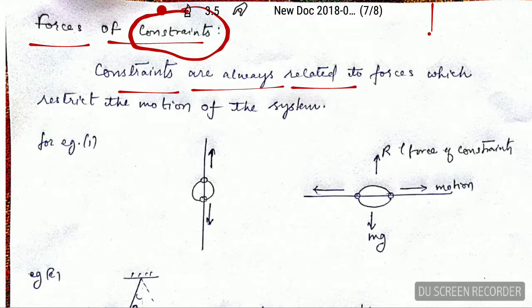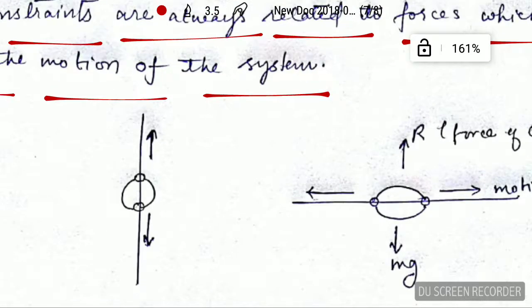As I have written here, you can see that constraints are always related with forces. That means whenever there is a constraint, there will always be forces due to constraints, and these are the forces which restrict the motion of the system in a particular way.